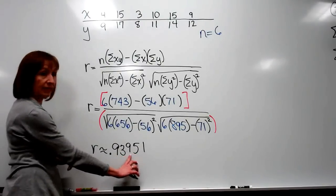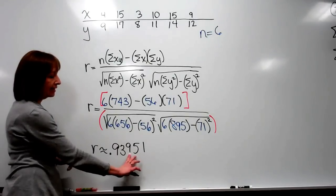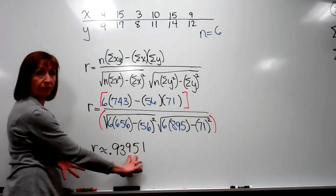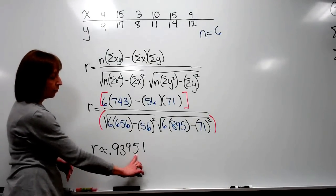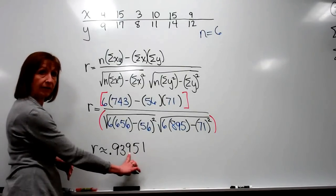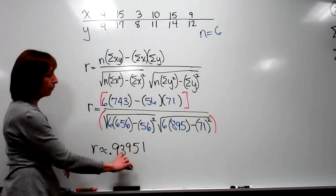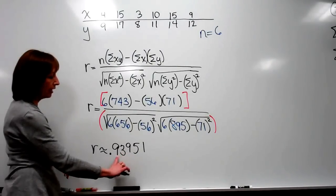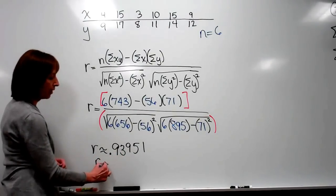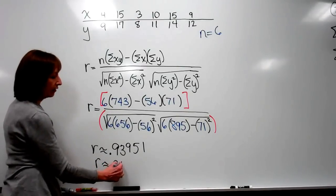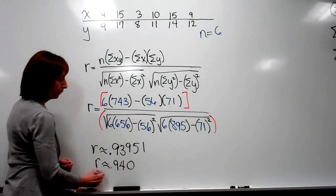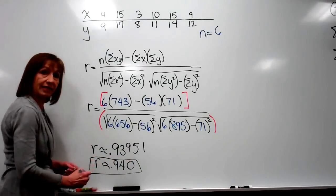So if I have one, two, three decimal places here, that's a 9, and the very next one over is a 5 or bigger, it's a 5. So I would need to round this up, but rounding 9 up would make that a 10, so there will be a 0 here, it will carry one into the next column for a 4, and then my 9. So my r is approximately .940 for this data set.